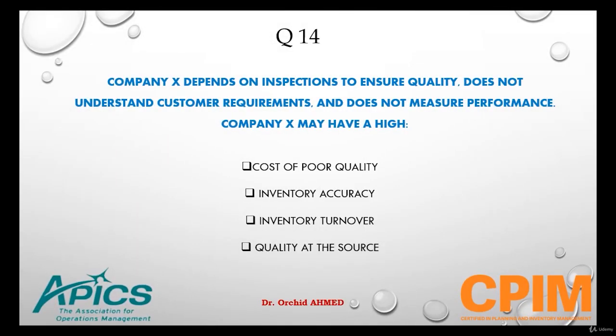Question number 14. Company X depends on inspection to ensure quality, does not understand customer requirements, and does not measure performance. Company X may have a high cost of poor quality, inventory accuracy, inventory turnover, or quality as a source. The answer is that Company X may have a high cost of poor quality.